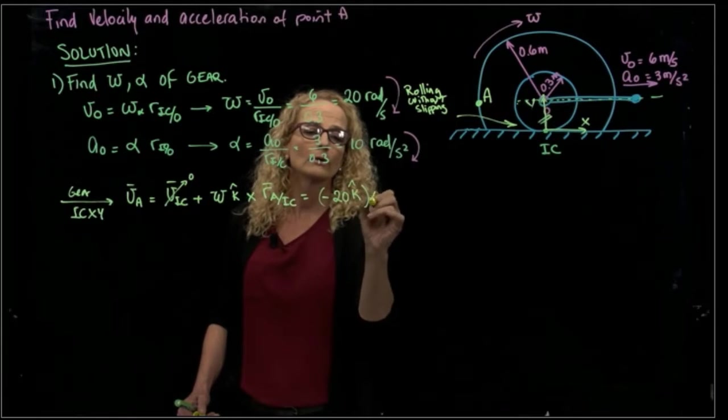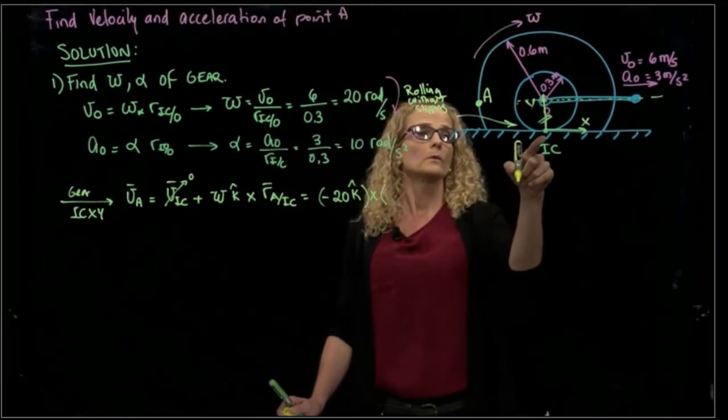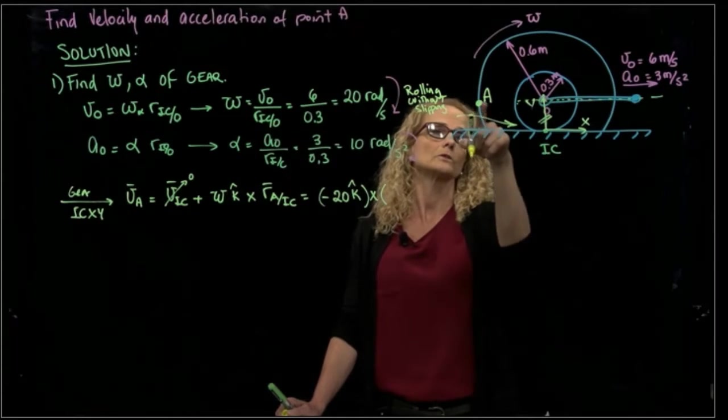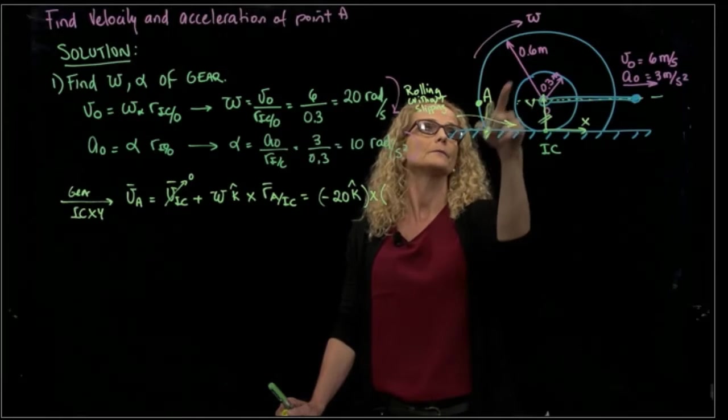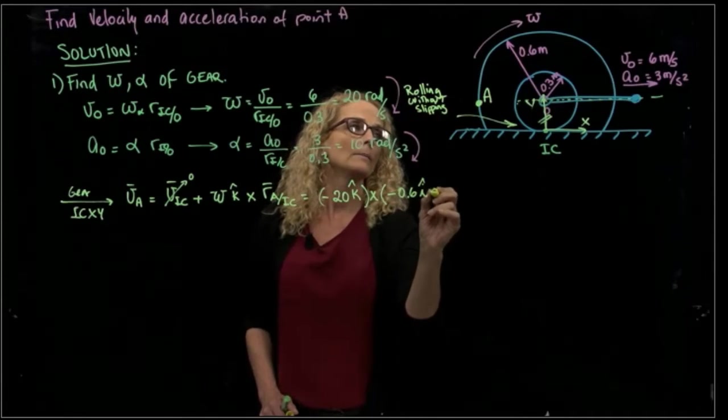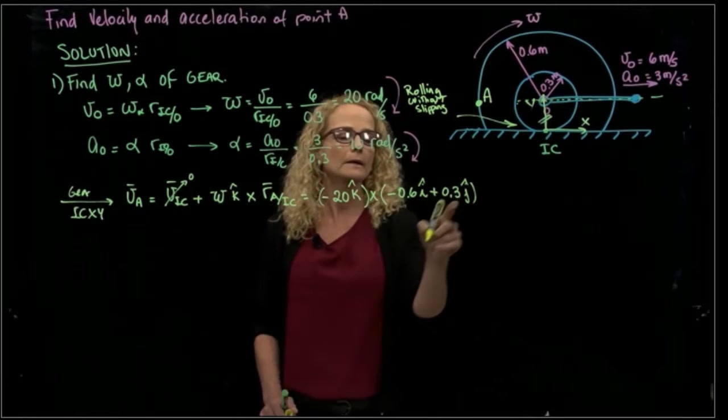Cross the distance from A to that instant center of rotation. So that will then be negative 20 in K cross product. And the vector from the instant center of rotation to A will be negative 0.6 in I plus 0.3 in J.